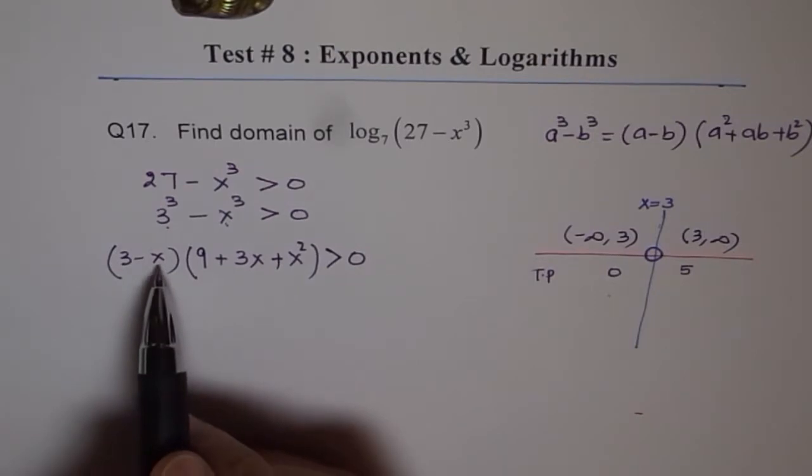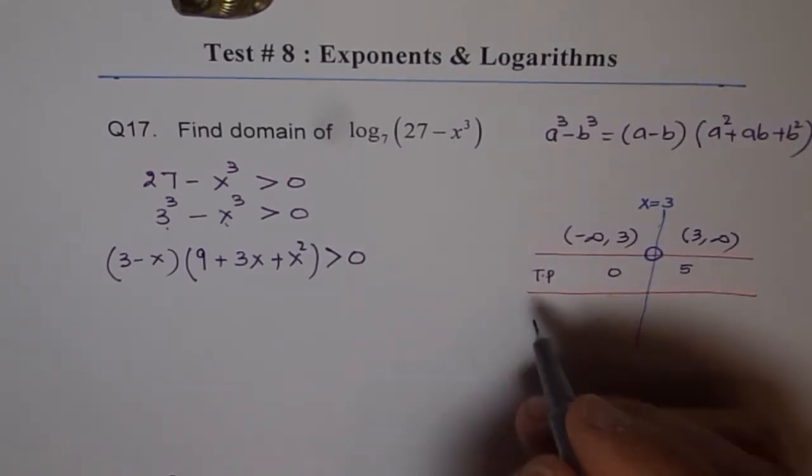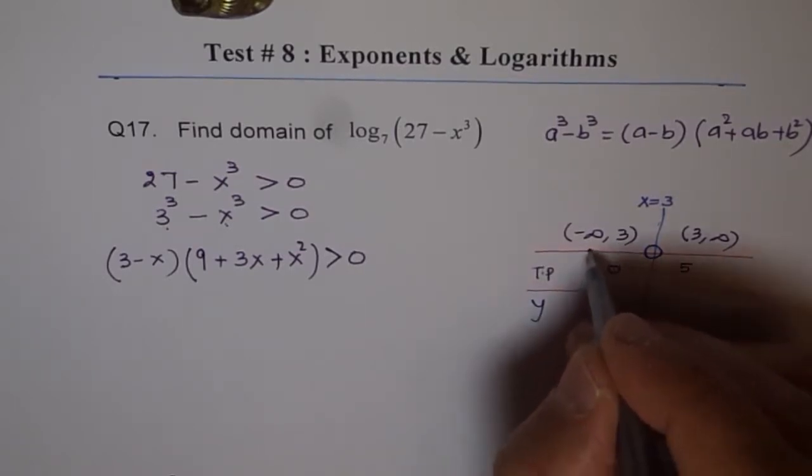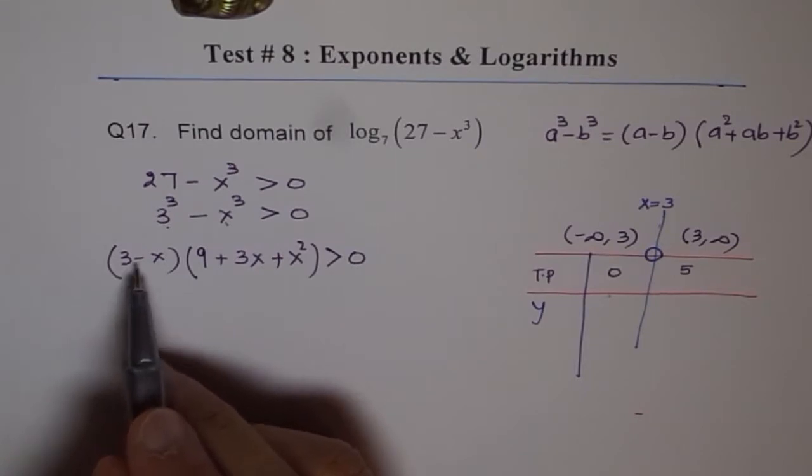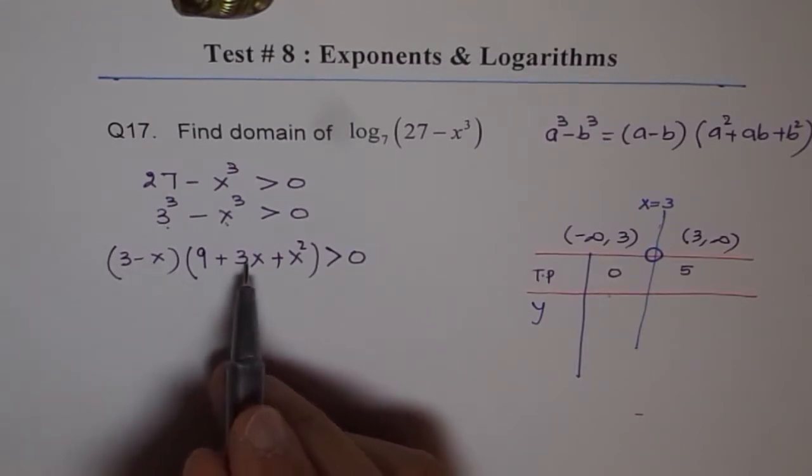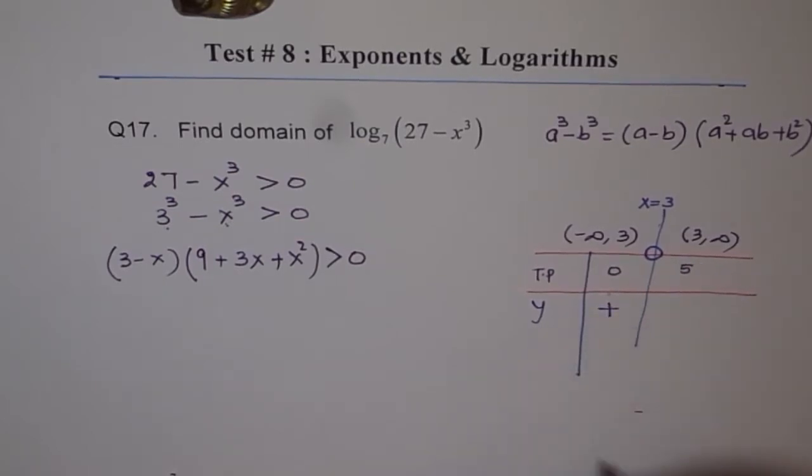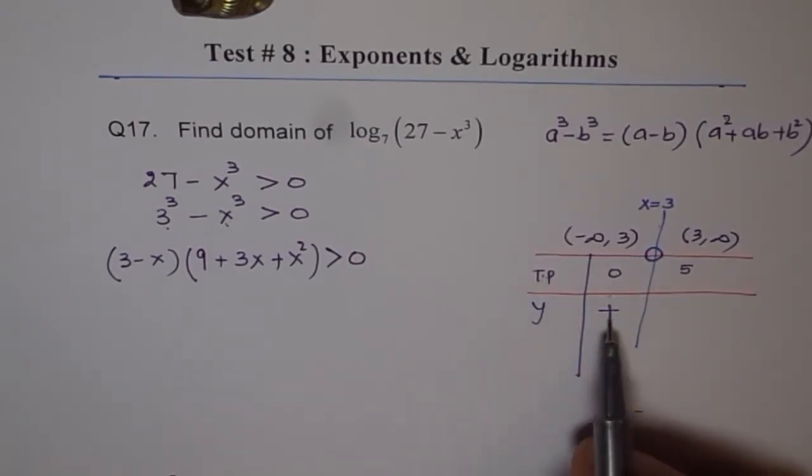Now, if I put 0 here, then 3 minus 0 will be positive. Let's test it now. We write down our function as y value. If I test at 0, I get 3 minus 0 which is positive, and here it is 9. So I get something which is positive. Any point in this domain will give me positive result.